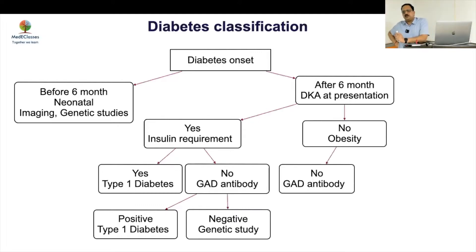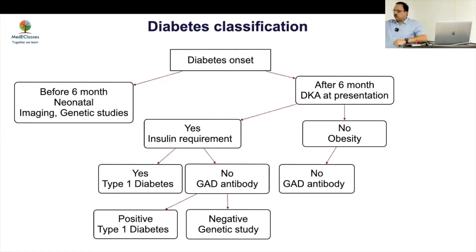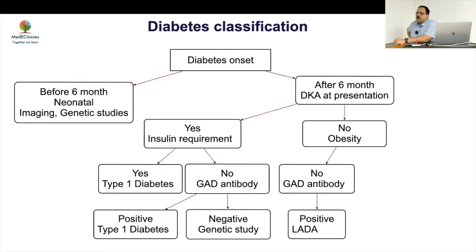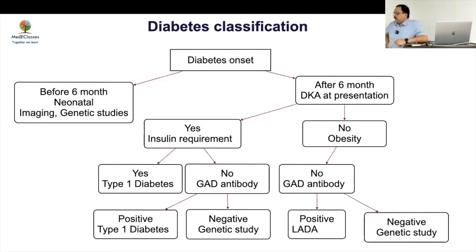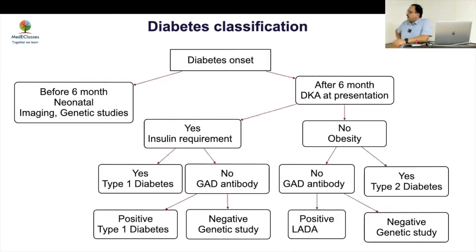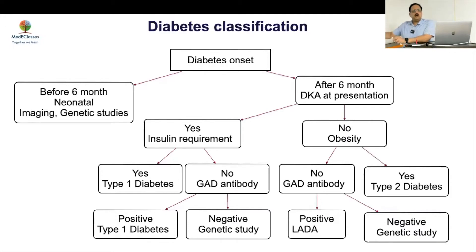If there is no DKA and no obesity, this is a confusing picture — it can be MODY or LADA because it may evolve over time. Do a GAD antibody: if positive, this is LADA; if negative, go for genetic study. If there is obesity and no ketosis and the child is stable, this is most likely Type 2 diabetes.